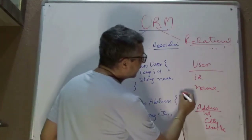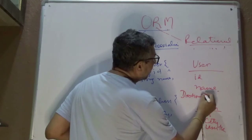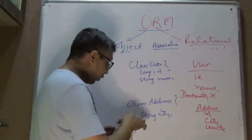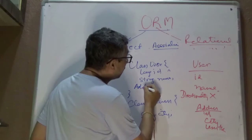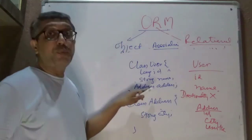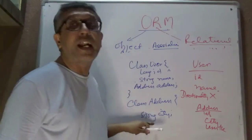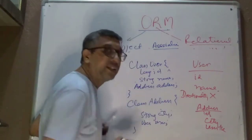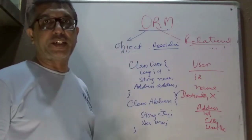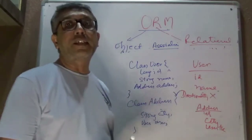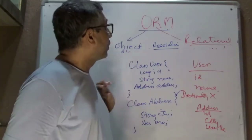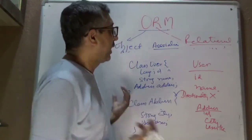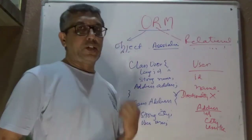On the object side, if you need an address, you need to put a handle in the User object. But putting a handle in User doesn't automatically give you a User handle in the Address object — you have to explicitly add it. There is a strong sense of directionality on the object side that doesn't exist on the relational side, and ORM frameworks help you seamlessly handle this.